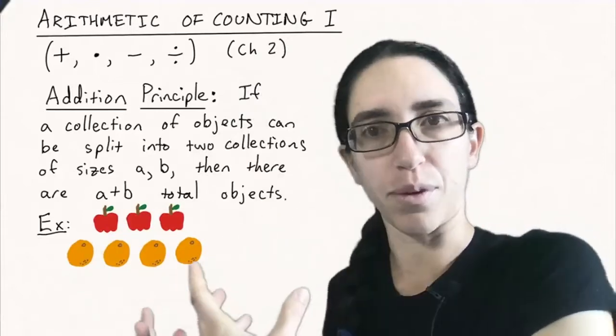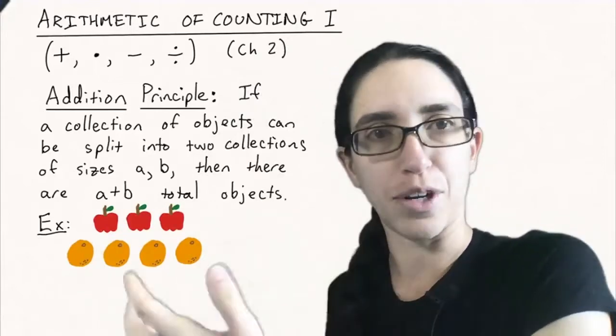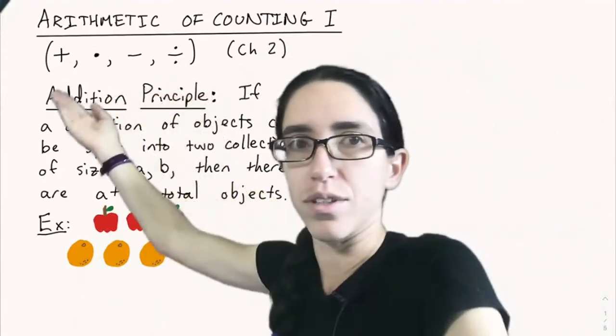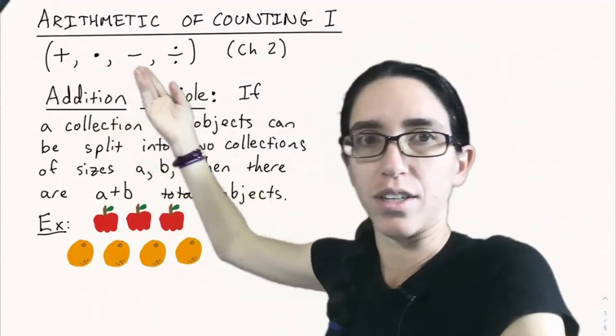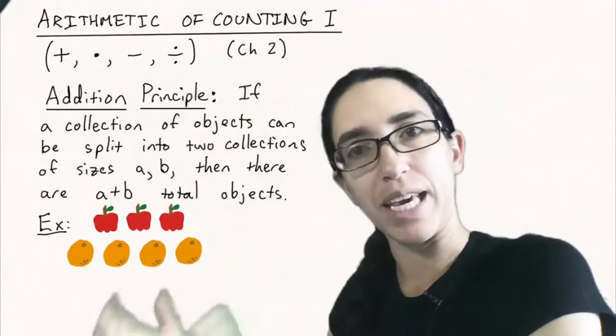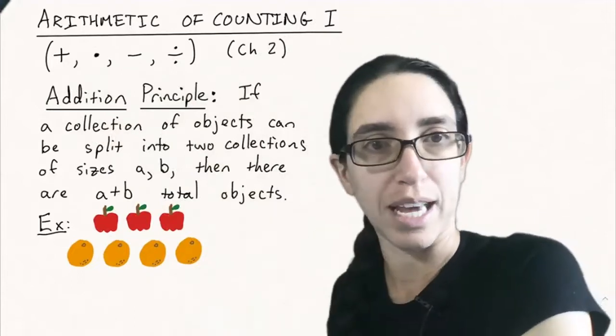Now we're going to start building combinatorial theory from the ground up, starting with the basic principles of what is addition, multiplication, subtraction, and division. What do they mean in combinatorics? How can we use them to count things?